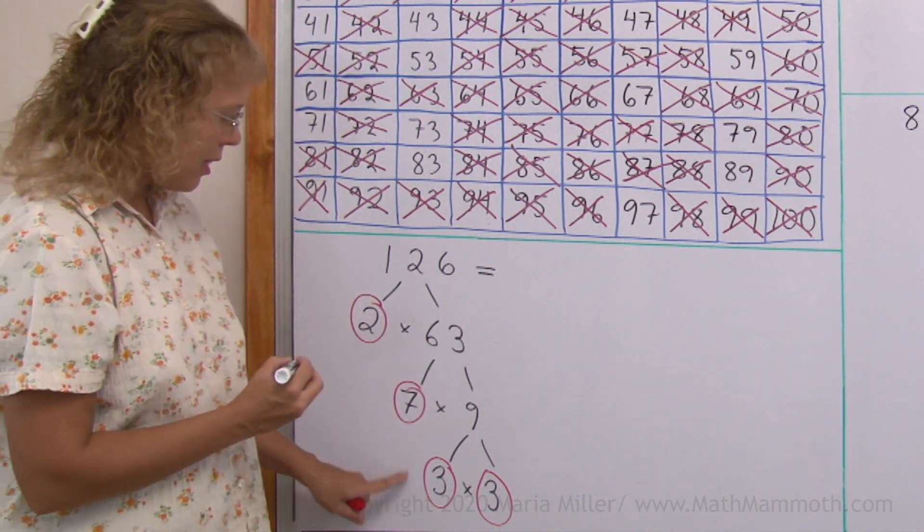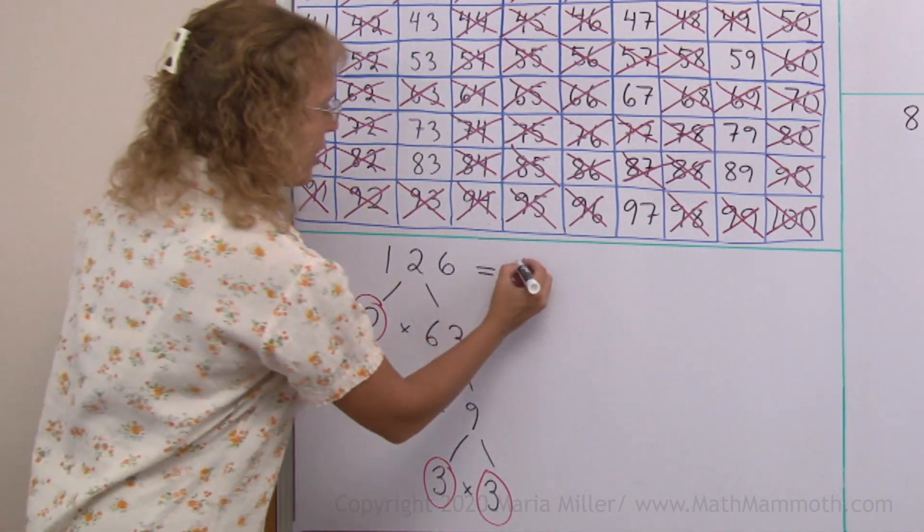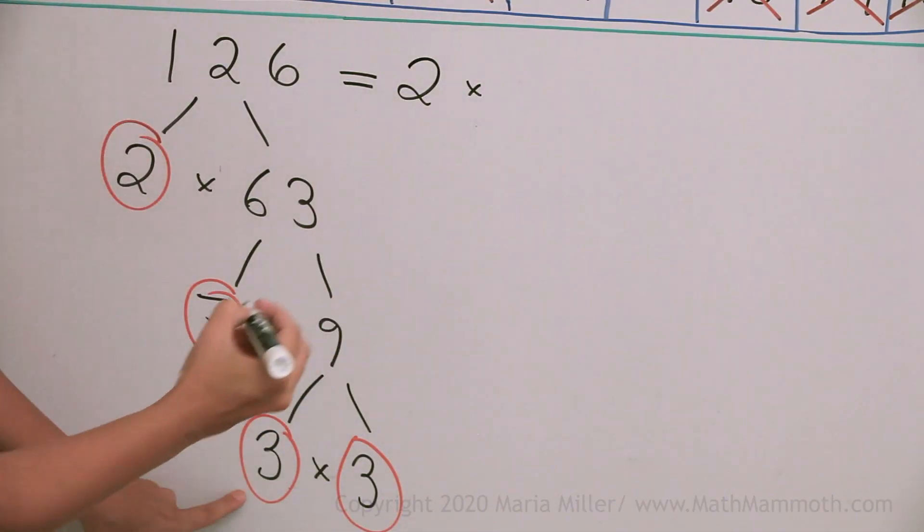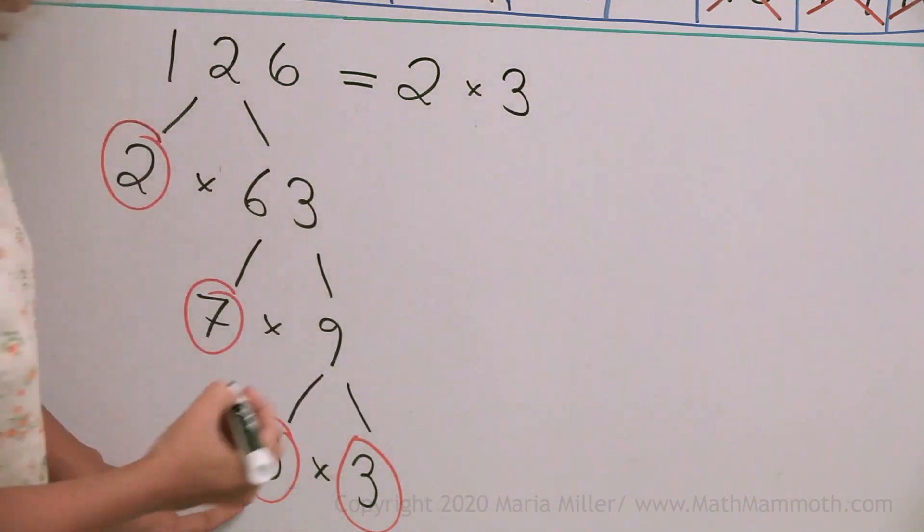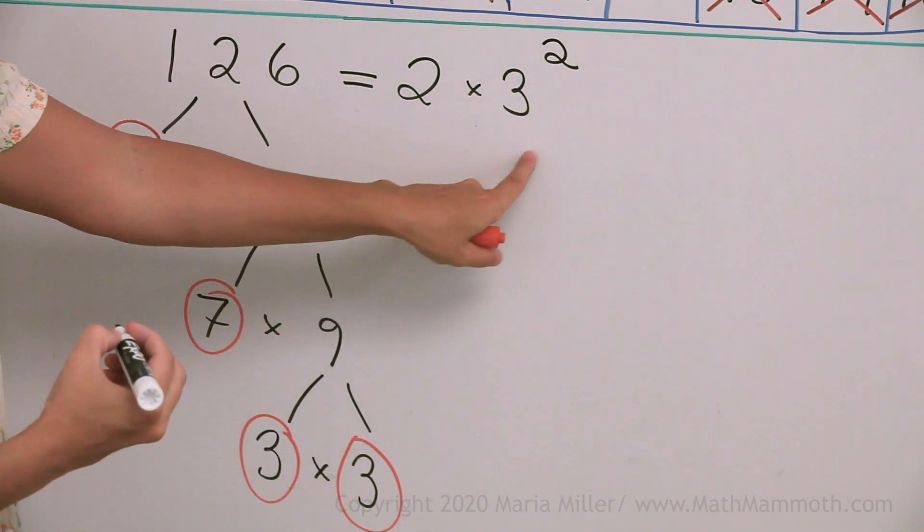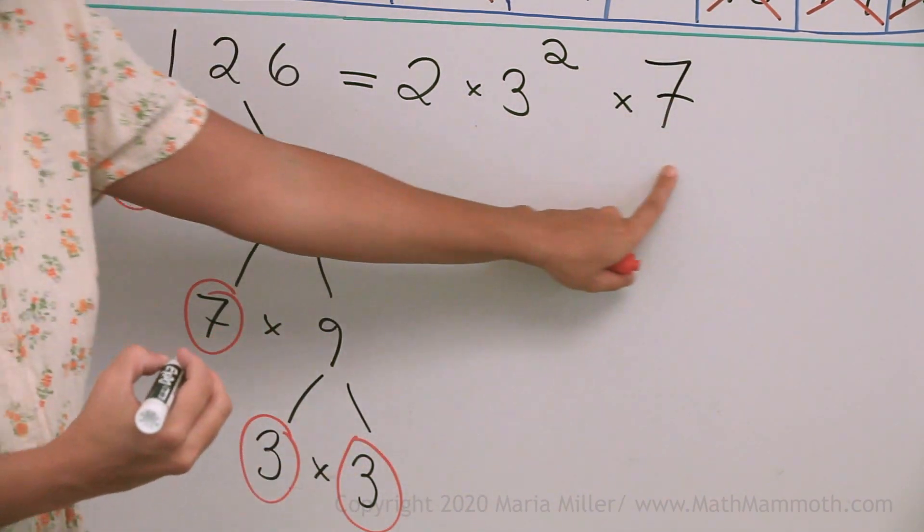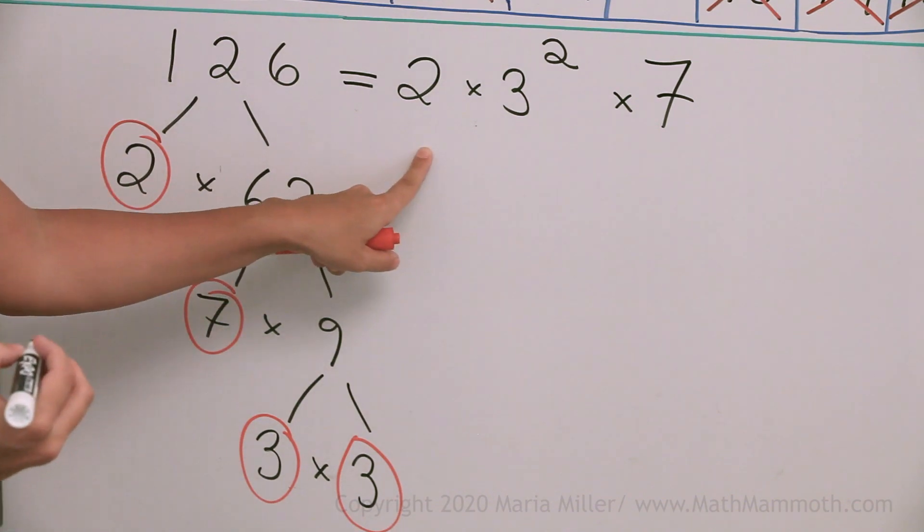I will write 2 times 7 times 3 times 3, but not in that order. Let's start with the smallest prime. 2 times 3 times 3 times 7. This is the prime factorization of 126.